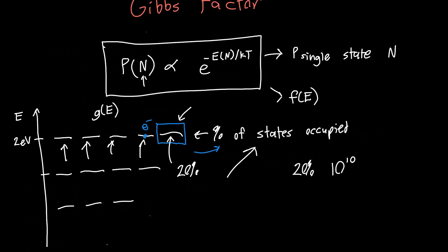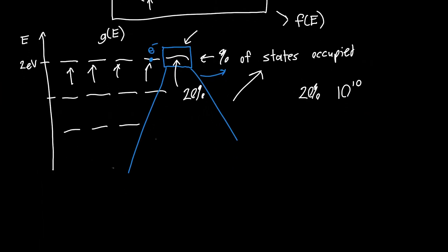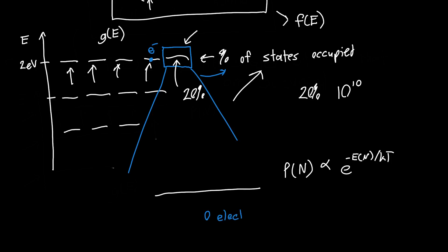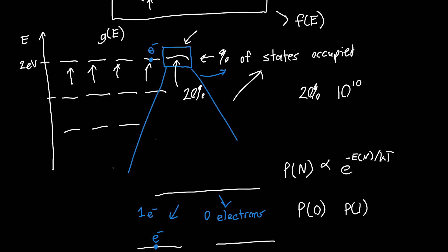So let's zoom in on a single state and draw it nice and big. We know that the probability of this state having n electrons in it is proportional to e to the minus energy of that state with n electrons divided by kT. But we know from the Pauli exclusion principle that there's either zero electrons — the state is unoccupied — or there's one electron. So there's only two possible cases: p of 0 and p of 1.